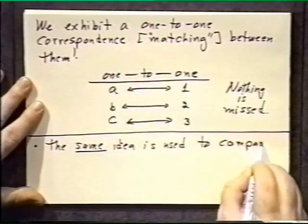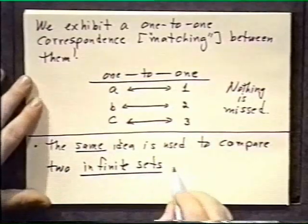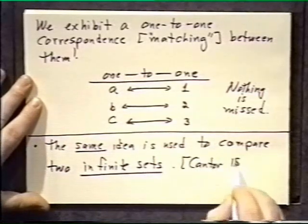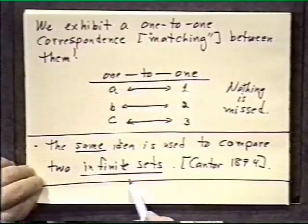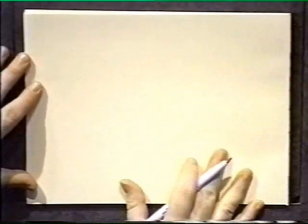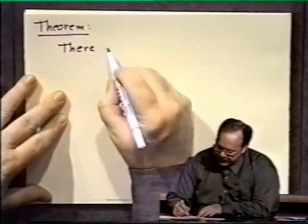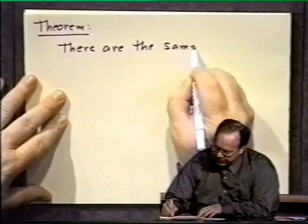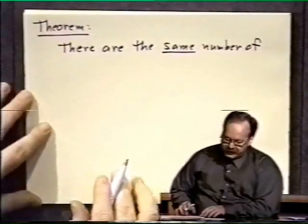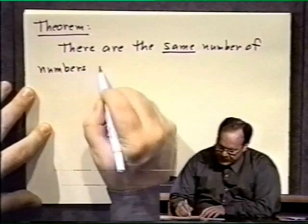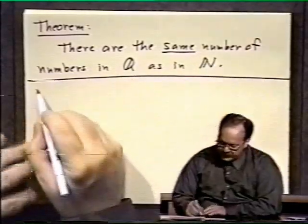The very same idea is used to compare infinite sets. Now we have to be a little careful how we do it, but it works just fine. This is due to a man named Cantor in 1874 — fairly recent as a mathematical idea, because people in the past were a little bit leery of dealing with infinite sets. So here is the actual theorem we are going to prove: there are the same number — the proper word is cardinality — of numbers in Q, the rational numbers, as in N, the natural numbers.